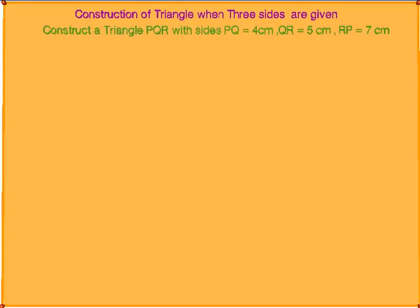Today you will learn how to construct a triangle when three sides are given. Construct a triangle PQR with sides PQ 4 cm, QR 5 cm and RP 7 cm.